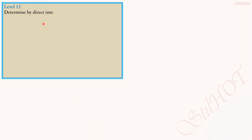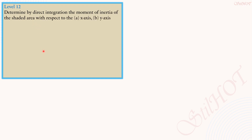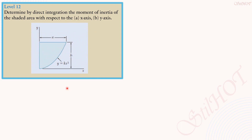Level 12. Determine by direct integration the moment of inertia of the shaded area with respect to the x-axis and b) the y-axis. Here is the given figure. For our solution, let's use a horizontal strip. The length of the strip is x, the thickness is dy. The distance of the strip from the x-axis is y.